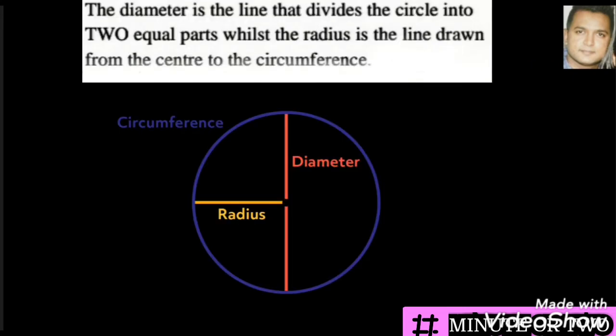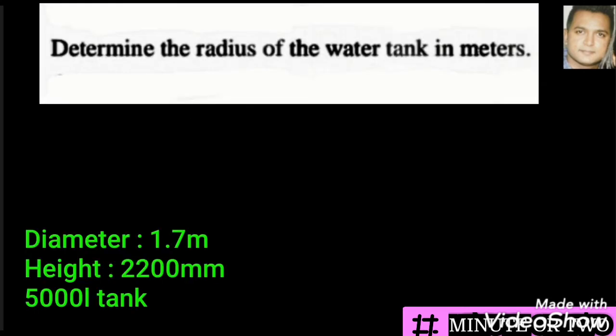Explain the difference between diameter and radius. The diameter is the line that divides the circle into two equal parts, whilst the radius is the line drawn from the center to the circumference.